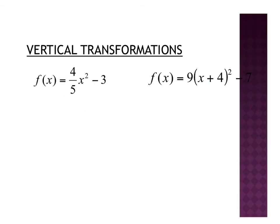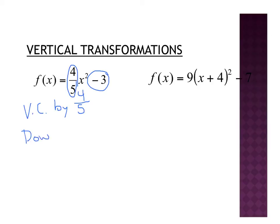Now we have a couple of combo transformations. This first one has a coefficient out in front of the x squared. Remember, when it's multiplication, we're talking about stretch or compression. Well, 4 fifths is between 0 and 1, so I have a vertical compression by a factor of 4 fifths. Over here, I've got a minus 3. That minus 3 is outside the squared part, so it's again vertical — up or down. In this case, we're going down 3.